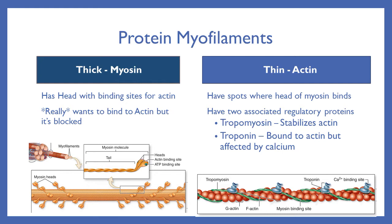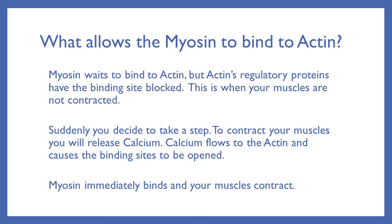The thin filament is also composed of protein, and it's called actin. Actin has two associated regulatory proteins that affect how it works: tropomyosin helps with stabilizing the actin, and troponin helps with the control of the binding sites. Myosin wants to bind to actin, but actin's regulatory proteins have the binding site blocked. This is when your muscles are relaxed.